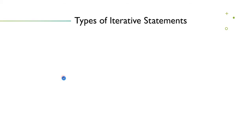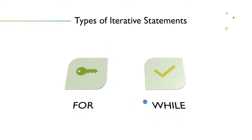Next, we are going to see the types of iterative statements. The first one is the for loop, and then the while loop. These are the two types of iterative statements available in Python — and not only in Python, but in most programming languages as well.